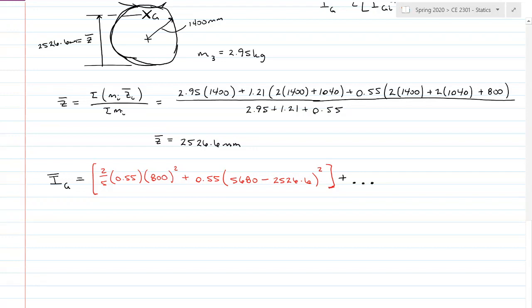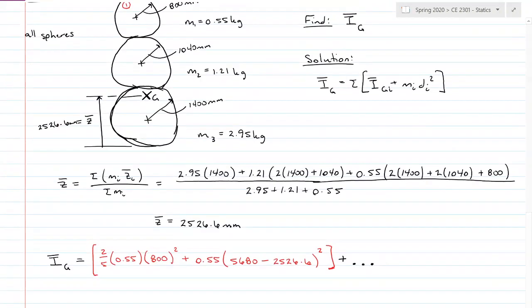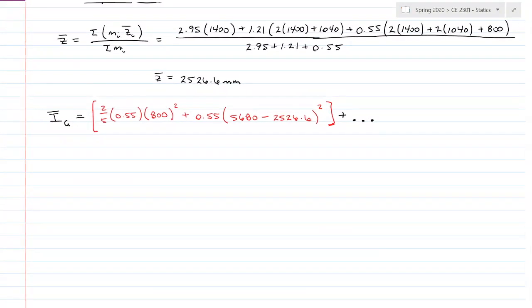Plus dot, dot, dot, because I am not going to fit all three on there. Second sphere, let's do this in blue too. It has the same equation for the centroidal mass moment of inertia: 2/5 of the mass, 1.21, times the radius, 1040 squared, plus its mass, 1.21, times the distance from its centroid to the composite centroid, which is 3,840 millimeters from the bottom of the entire composite body to the center of the middle sphere, minus 2,526.6 squared, plus dot, dot, dot.